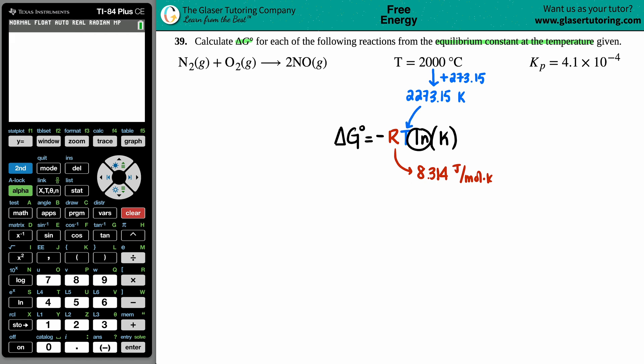ln is the function on the calculator which I will get to in a bit, but it's just that equilibrium constant, and that is 4.1 × 10⁻⁴. We got everything, let's plug it in. ΔG for that reaction will equal—the negative is in the formula—so it's negative 8.314 times by the temperature 2273.15, and now it's the ln of 4.1 × 10⁻⁴.